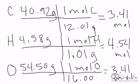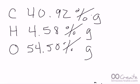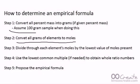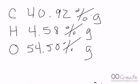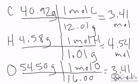So if you remember, now that we have this done, the next step, step three, we've converted them all to moles. We're going to divide through each element's mole by the lowest value of moles present. So if we go back and we look at the lowest value of moles present, I have 3.41, 4.54, and 3.41. So 3.41 would be tied between oxygen and carbon for the lowest moles present.